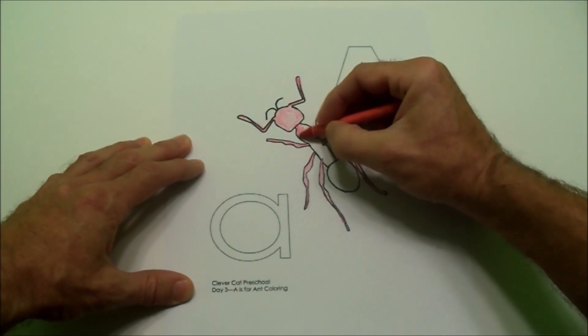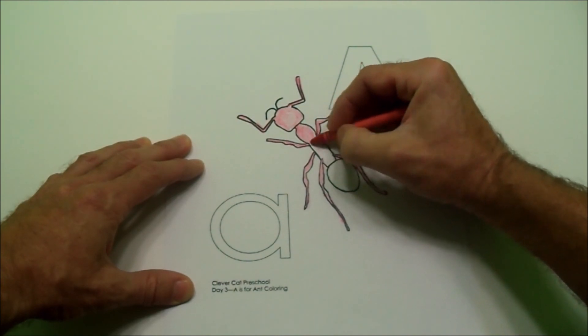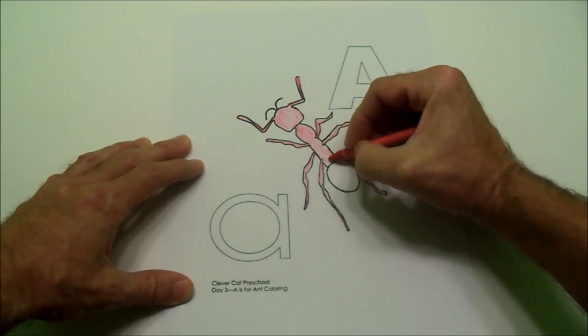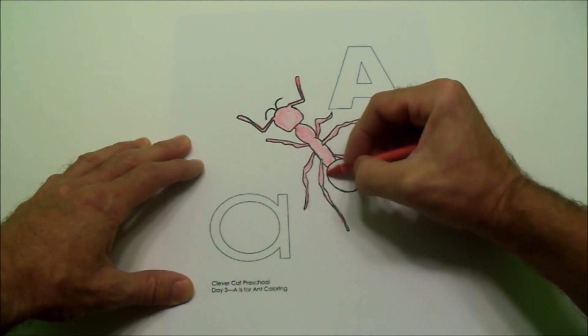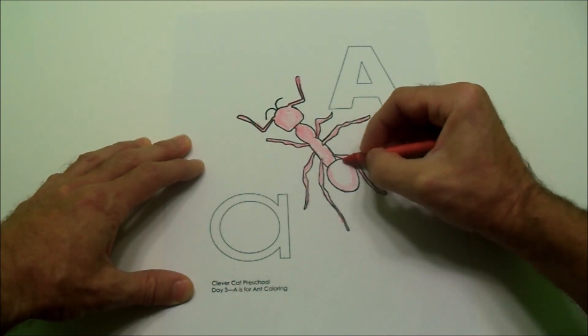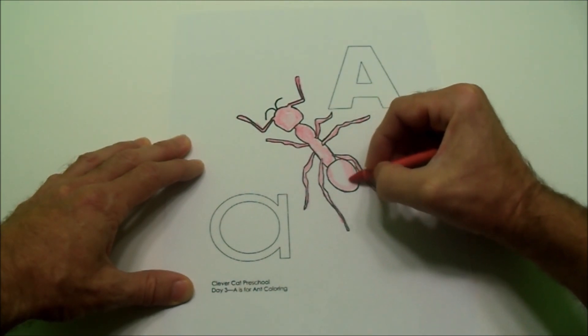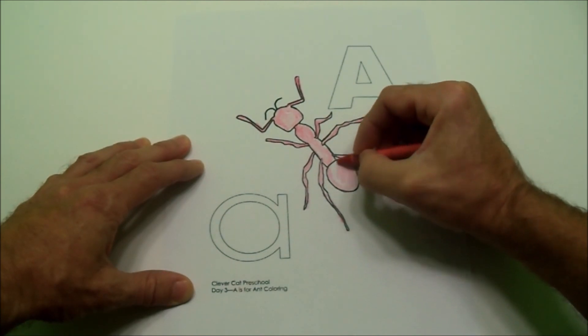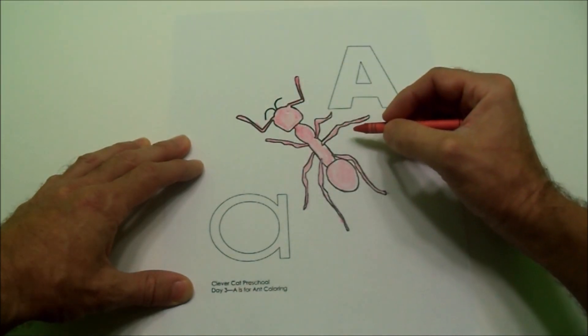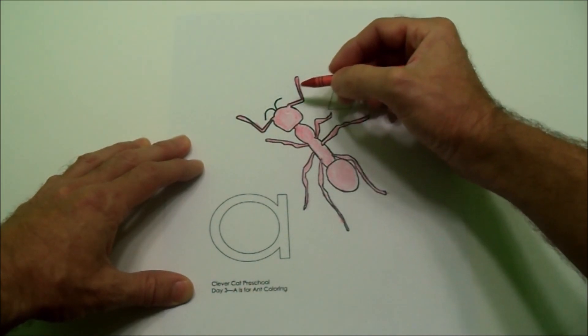Now, we can color the body. Do you like to color? I think coloring is fun. I hope you like to color. Look at all that color, the color red. Coloring the body red. And we colored the legs red and we colored the antenna red.